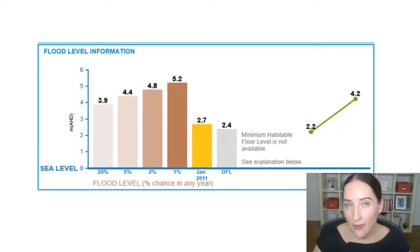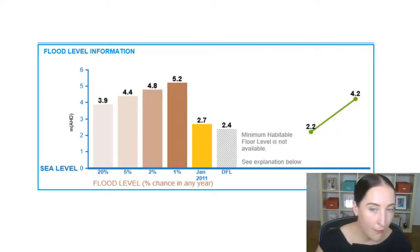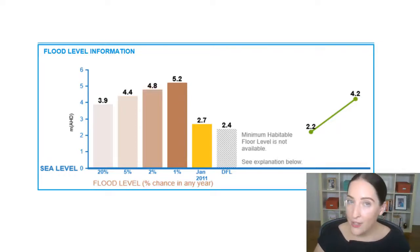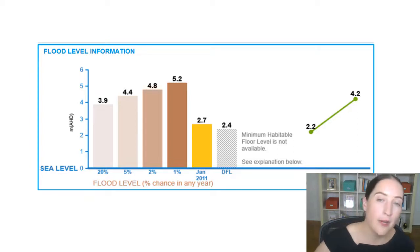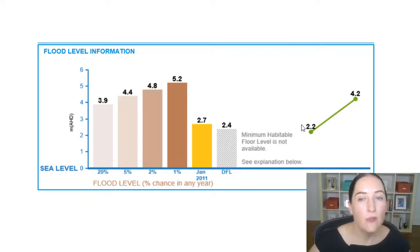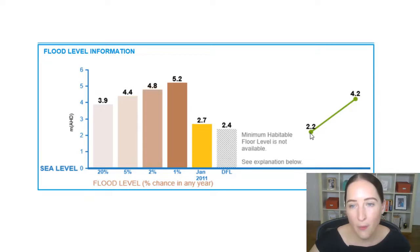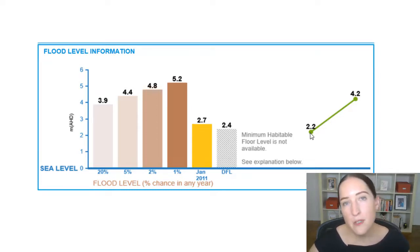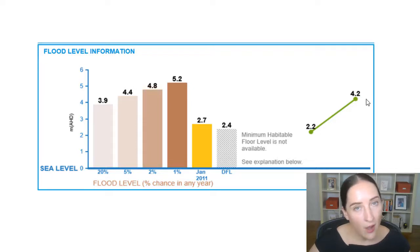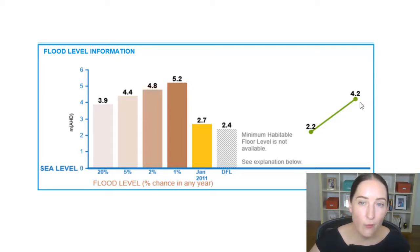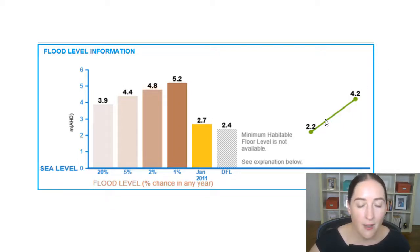We also have the January 2011 historical flood information, the DFL, and the contours on the property. This information suggests that if you were standing on the lowest portion of the property, you'd be standing on ground that is 2.2 meters above sea level (AHD), and if you're standing on the highest part of the property you'd be 4.2 meters above sea level. So there is a 2-meter fall across the entire property.